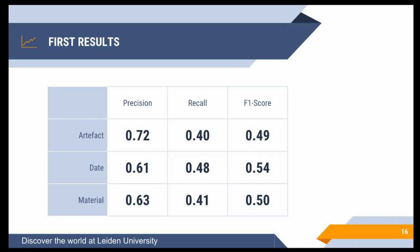Here are my first results: precision measures how often the algorithm is correct when it identifies something as a concept; recall measures how many of the actual concepts in the text it finds; and the F1 score is the harmonic mean of the two. I'm focusing on three entity types: artifacts, dates, and materials. Precision is between 16–70%, the recall is lower at around 40%, giving an average F1 score of roughly 50%. These numbers are promising but fairly low. Two possible reasons: issues in the corpus where entities were tagged wrong or sections missed, and the thesaurus not being designed for linguistic research, making word matching difficult.